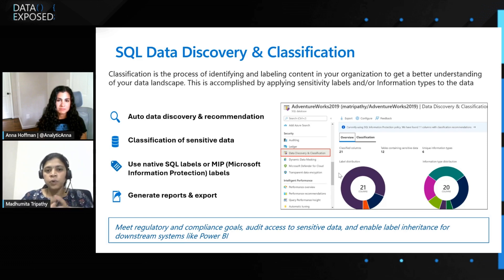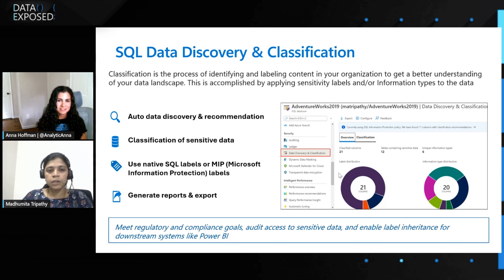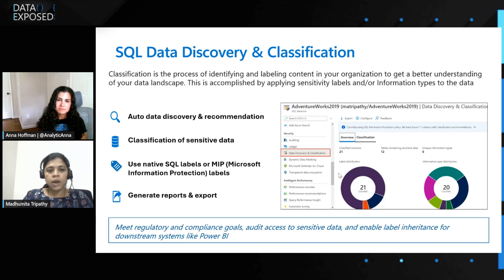If you have Microsoft 365 with an E3 or E5 license, you would have seen in Office or in your email that you can label your email or document. We have extended that same concept to SQL Server and Azure SQL, wherein you can use these MIP labels to classify your data inside the SQL database. You get a standard set of labels that you're already using in Office, and now that same set is understood by Azure SQL database, just as it is understood by Power BI.